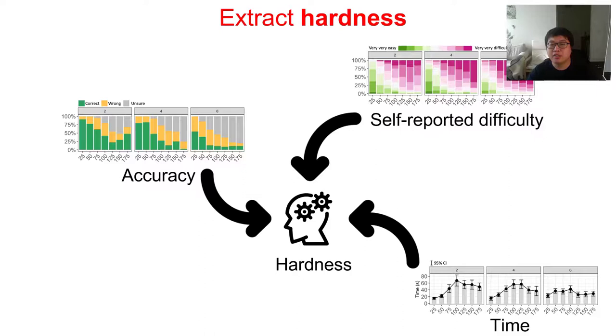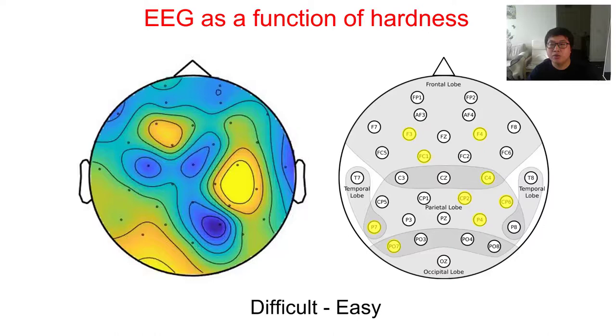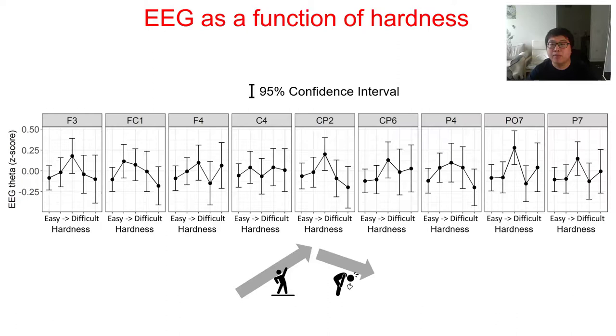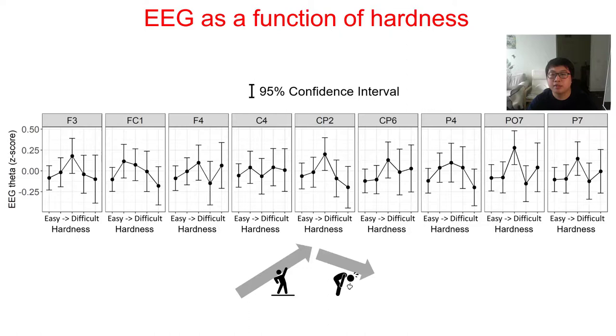Next, we are going to look at the relationship between hardness and the physiological measures. Let us first check the relationship between EEG and the hardness. We choose the electrodes that we identified in our preliminary analysis. The x-axis is showing hardness from easy to difficult, and the y-axis shows the normalized EEG power. It had a similar trend as time. For most electrodes, it went up and down. We conjectured that it is because once the task becomes very difficult, participants switched off and no longer make the effort to find the right answer, so cognitive load decreased.